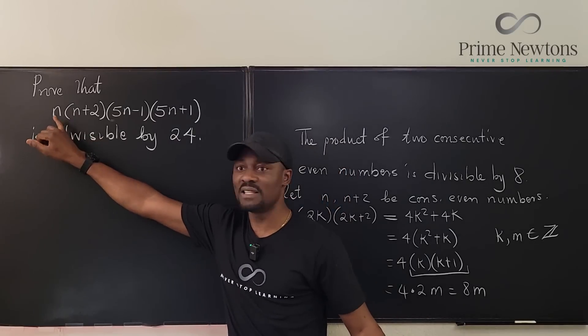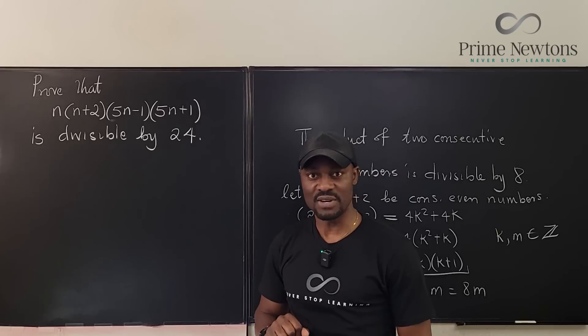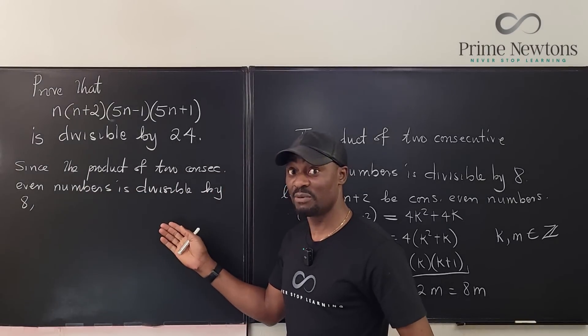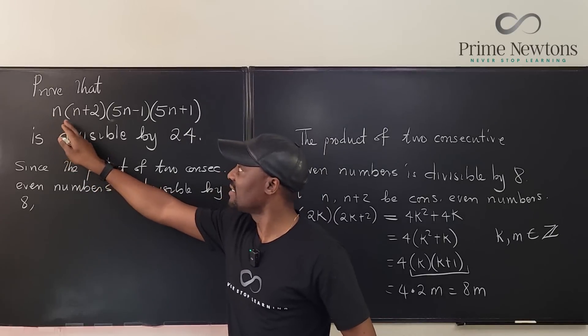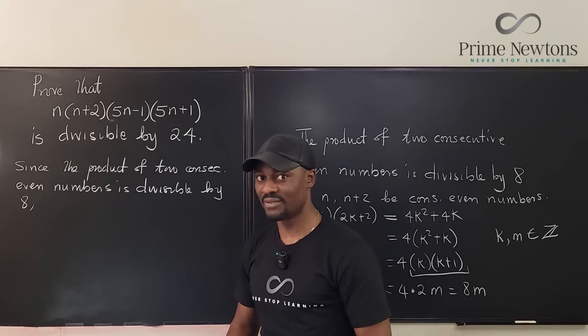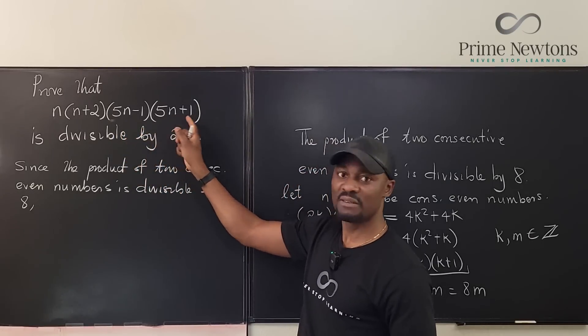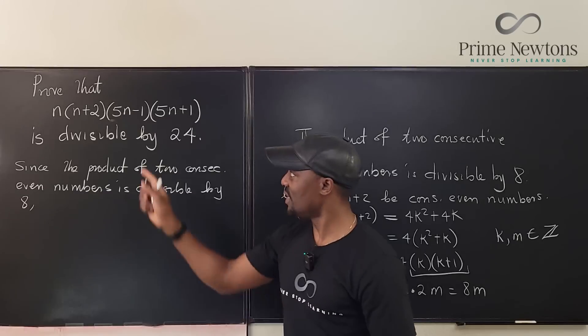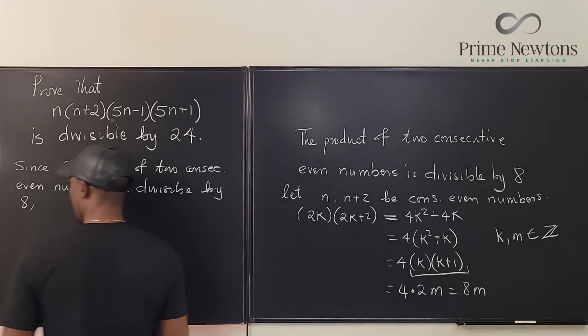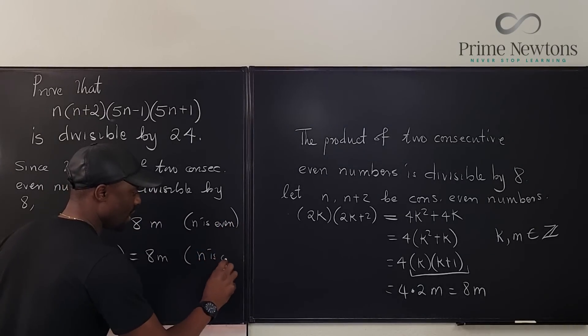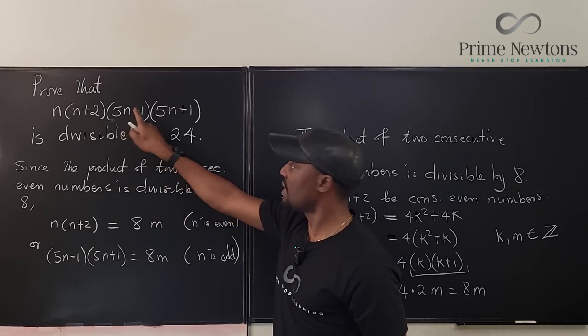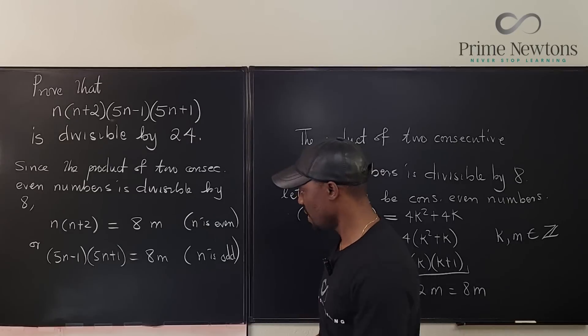So however you view n, whether n is even or odd, these are two consecutive even numbers. So this is what I'm gonna say. Since the product of two consecutive even numbers is divisible by 8, I can say that n times n plus 2 is divisible by 8 if n is even, or 5n minus 1 times 5n plus 1 is divisible by 8 if n is odd. So we're gonna say this works for even and this works for odd. And that's it, because if n is odd this is going to be even and this is going to be even and they're two consecutive even numbers and we're done.